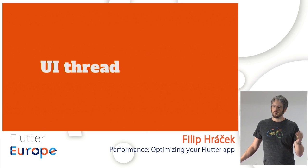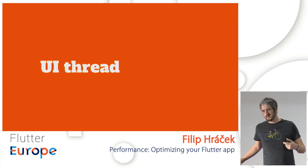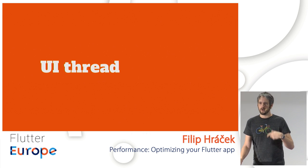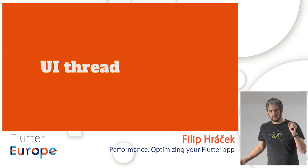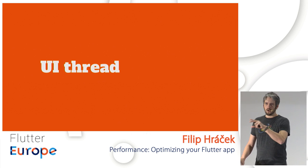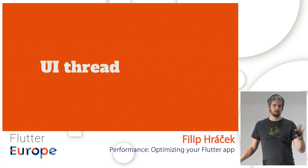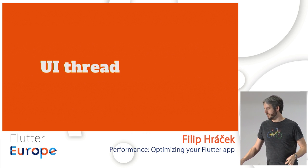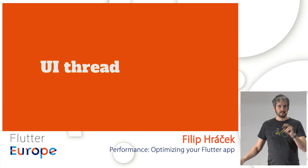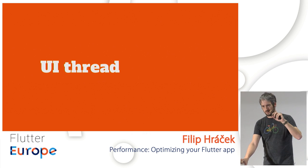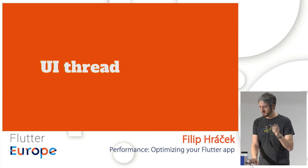Every Flutter application uses at least three threads: the UI thread — the main one — where you build your widgets and run your main() function; the GPU thread; and the IO thread. You don't touch those directly, but you can create your own threads for computation. If you take too much time in the UI thread, your app will jank, because that's where the Flutter framework runs.